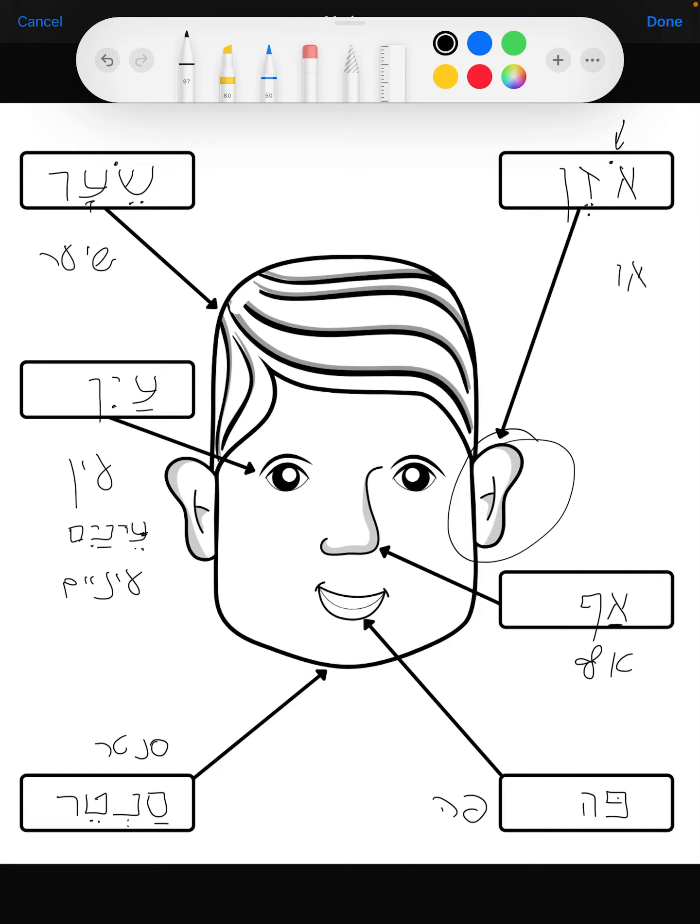Now we have a tsere right here. This little dot is a holam chaser, which means that if you have this aleph and then a vav, it has a dot, the o sound. But when you don't have the vav and you only have the dot, it's still an o sound.